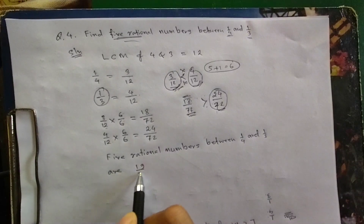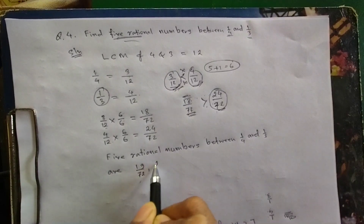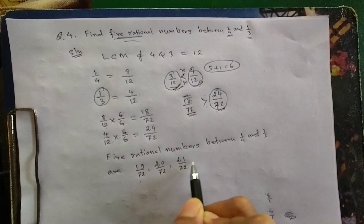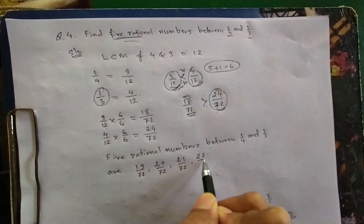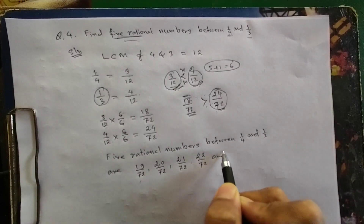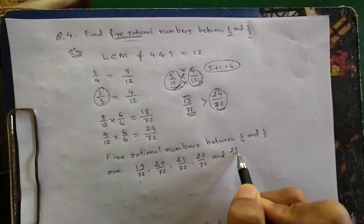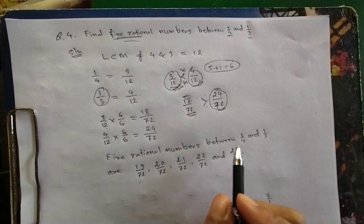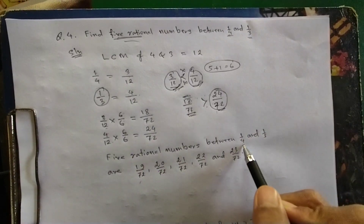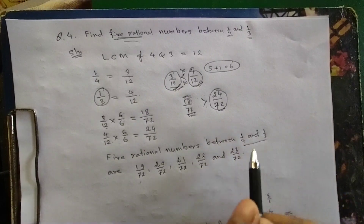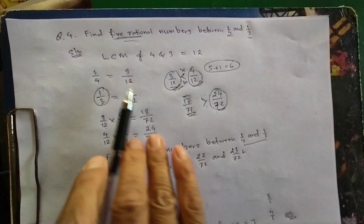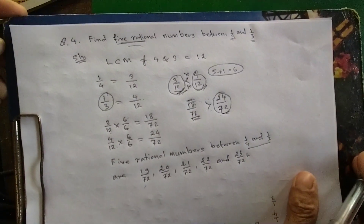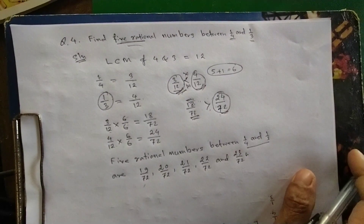The 5 rational numbers between 1/4 and 1/3 are: 19/72, 20/72, 21/72, 22/72, and 23/72. This completes Question number 4. Next is Question number 5.